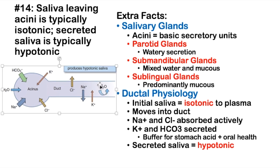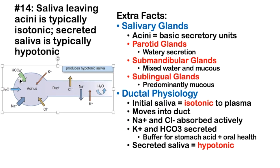There is also bicarbonate that is secreted. The bicarb acts as a buffer for stomach acid — eventually the bolus will reach the stomach where acid is very high, so you want to start getting some bicarb as soon as possible, and that happens here in the salivary tissue. It's also pretty good for oral health. So the secreted saliva is hypotonic as it leaves the duct.